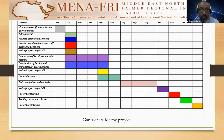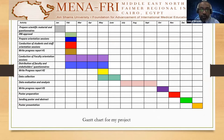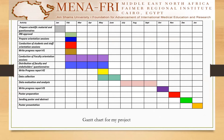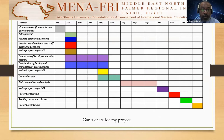A Gantt chart for my project was scheduled as follows: preparing scientific material and the questionnaires in January 2021; IRB approval; preparing orientation sessions; conduction of students and staff orientation sessions; and writing progress report number one in February 2021; conduction of faculty orientation sessions; and distribution of faculty and stakeholders questionnaires from February to May 2021.